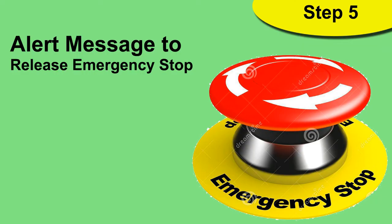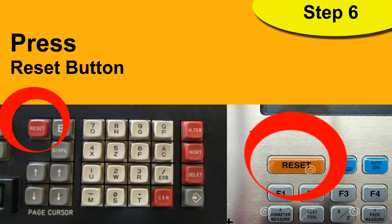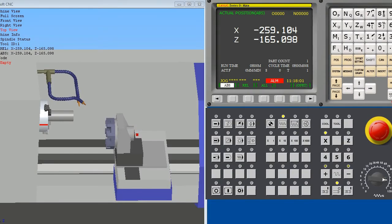At Step 5, after your data is loaded, an alert message will come up asking you to release the emergency stop button. You have to release it by rotating it. In Step 6, you have to press the machine reset button, which is placed on the control panel.